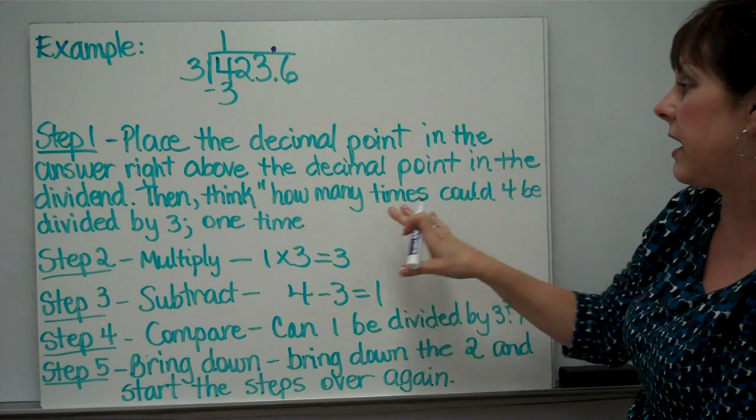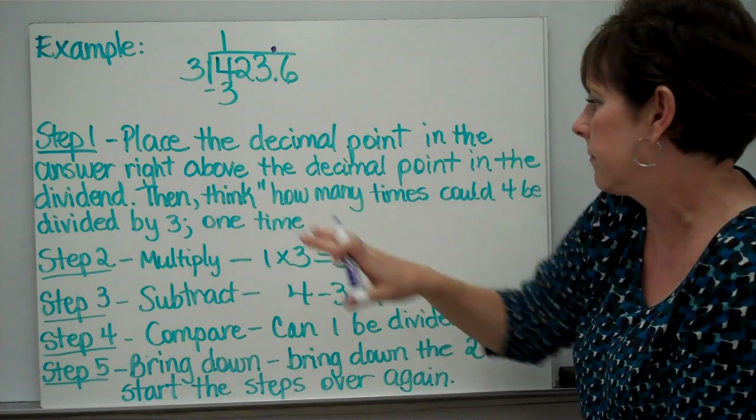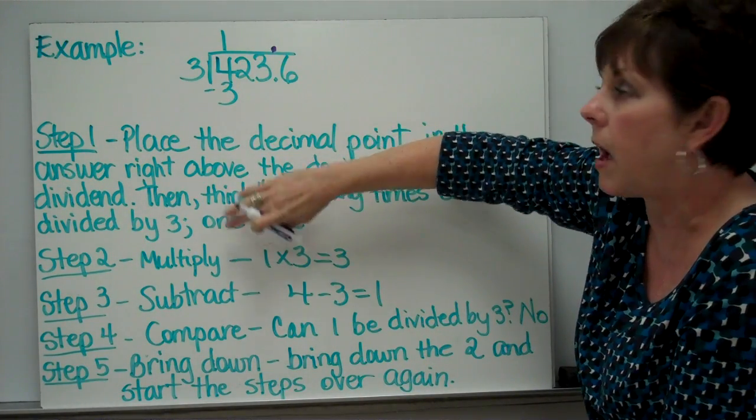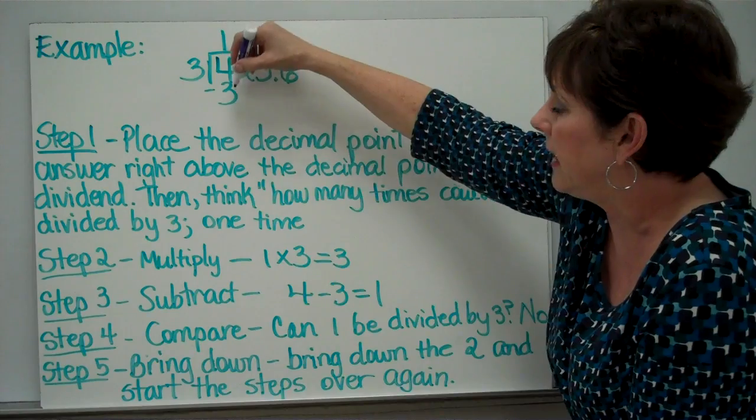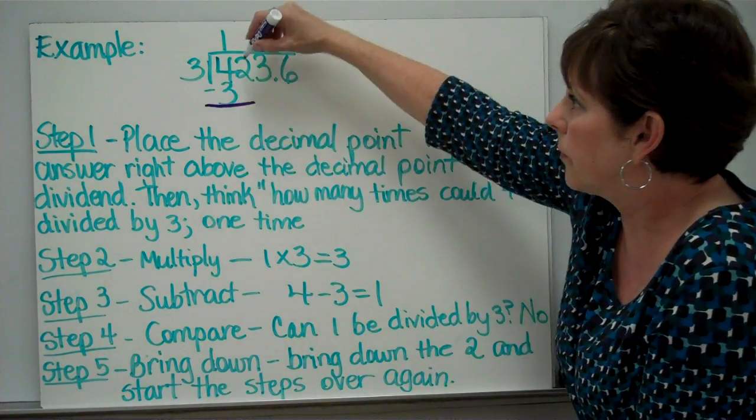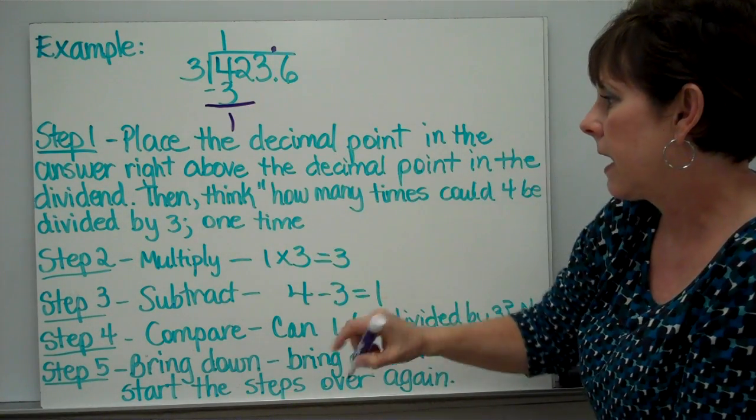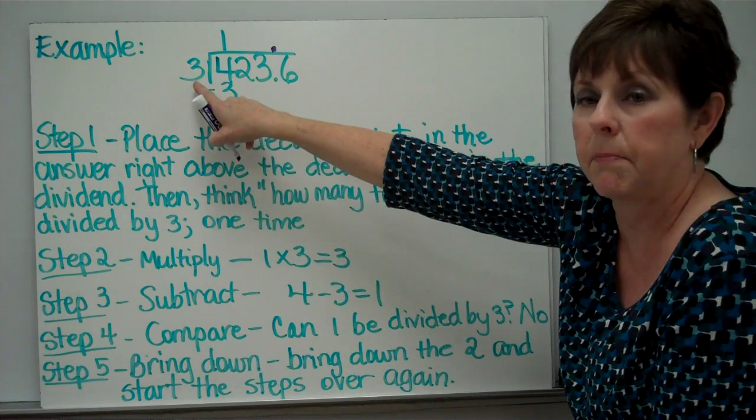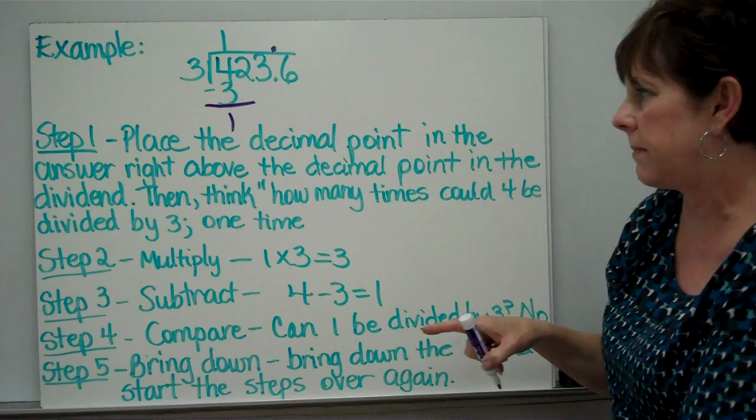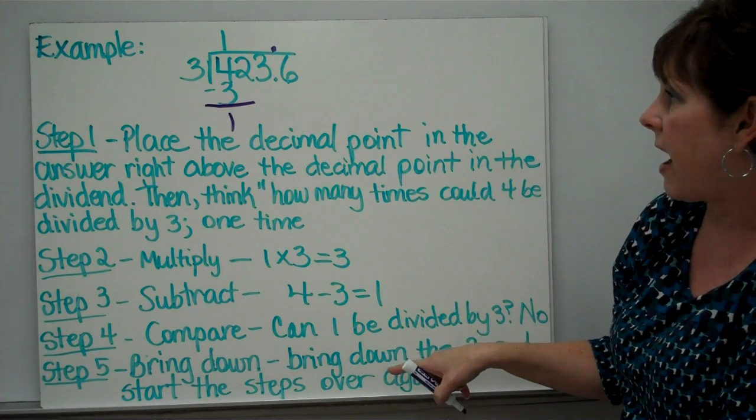Now I'm going to divide. How many times can 4 be divided by 3? One time. So we put our 1. Next, we multiply. 1 times 3 is 3. Next, subtract. 4 minus 3 is 1. Next, compare. Can 1 be divided by 3? No, 1 cannot be divided by 3. That answer should be no all the time. Then step five, bring down.